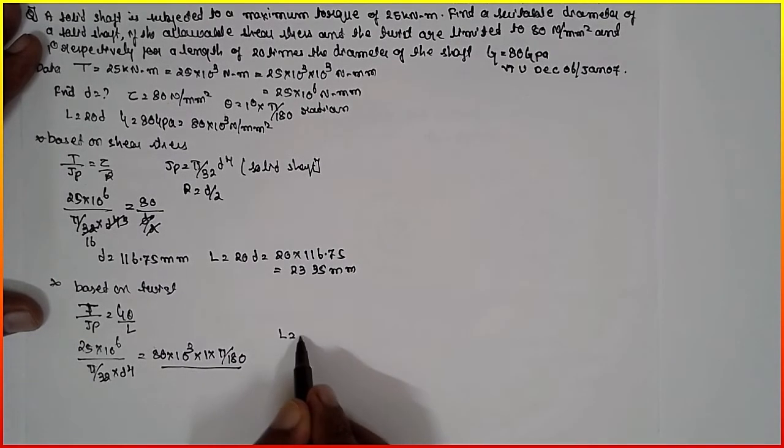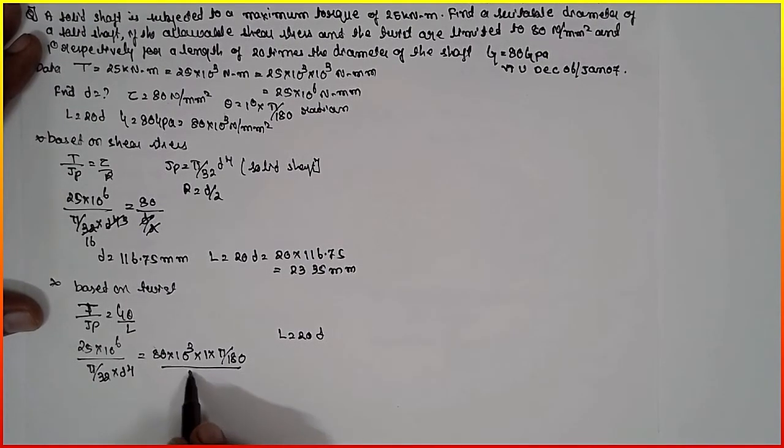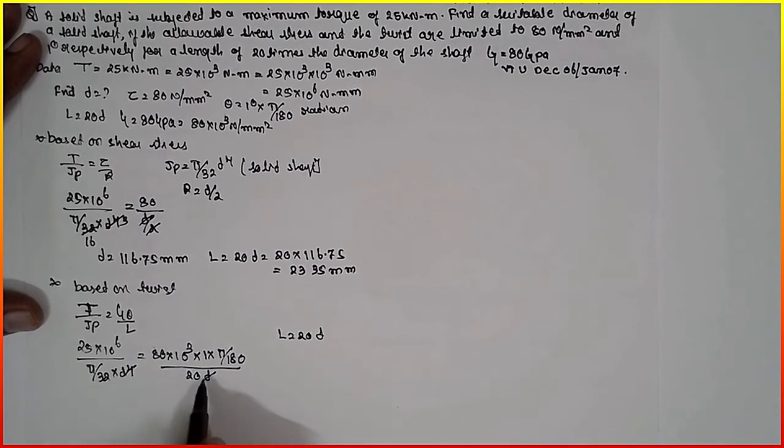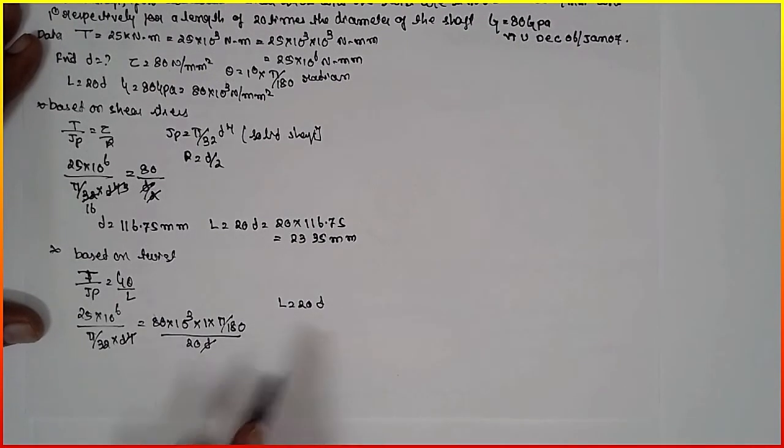G is 80 into 10 raised to 3. This, this gets cancelled. 20 and 20 get cancelled here. Cross multiply.